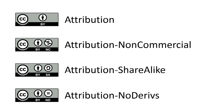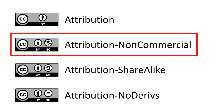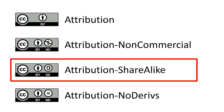Some licenses require a little bit more. For instance, attribution non-commercial means you have to give credit and you're not allowed to use the work to make money — you can use it any other way, but not to make money. Attribution share-alike means in addition to giving credit, you have to add the Creative Commons license to anything that you create.